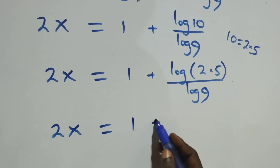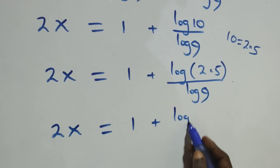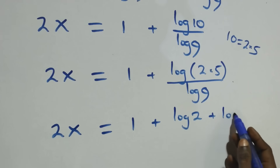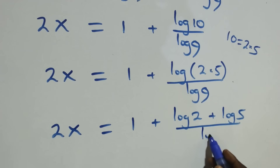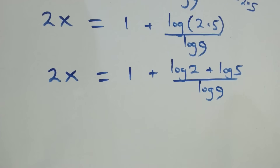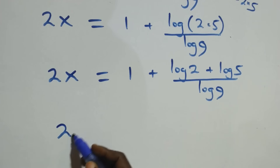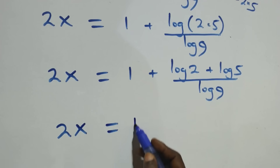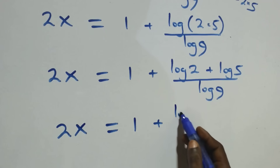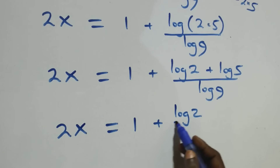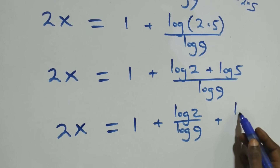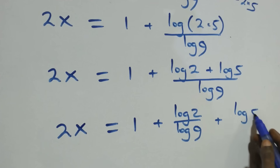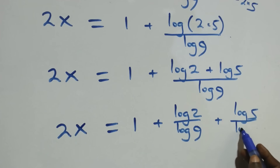This gives us log 1 plus log 2 plus log 5 over log 9. Separating into two fractions, we have 2x equals 1 plus log 2 over log 9, plus log 5 over log 9.